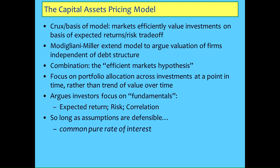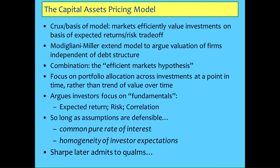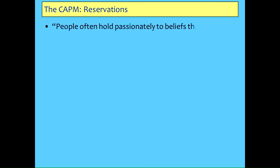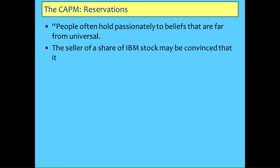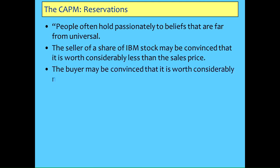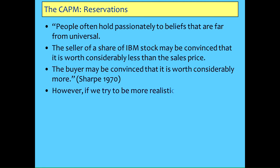All of that works as long as there is such a thing as a common pure rate of interest and investors all have the same beliefs. Looking in the literature, you can find where even people like Sharpe admit they've got a qualm about the theory. People often passionately hold beliefs that aren't universal at all - somebody selling IBM may believe it's overvalued, while the person buying it thinks it's undervalued, otherwise it wouldn't be traded. So he asked: what if you actually take this into account? What if you try to bring in the fact that people don't have homogeneous expectations? What happens?